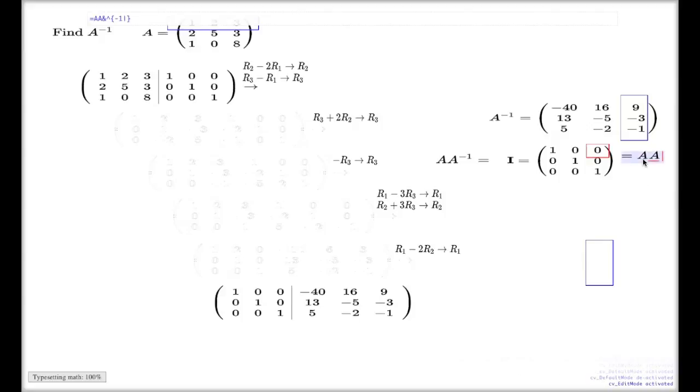So I encourage you to check in this way, A inverse times A. For instance, this zero element, this way I have to take the last column here and the first row here. We'll just see that. Negative 120 plus 48 plus 72. It is zero.